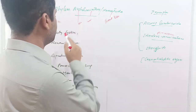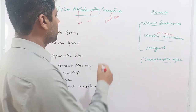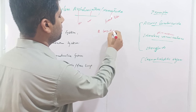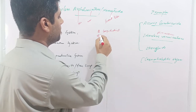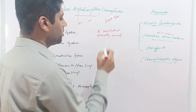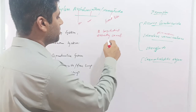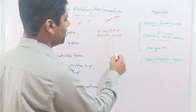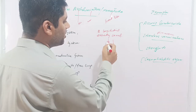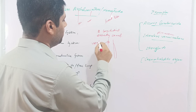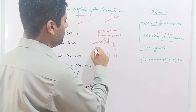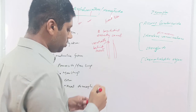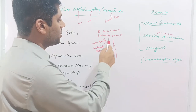The excretory system in nematodes consists of two longitudinal excretory canals running on the lateral sides of the body. These two excretory canals open in the form of excretory pores on the ventral side, just behind the mouth.